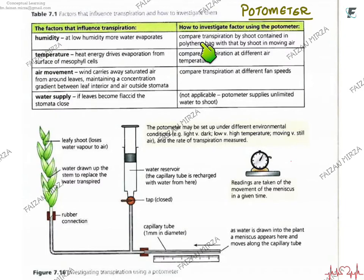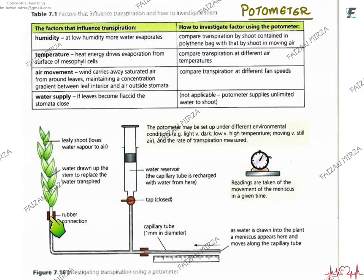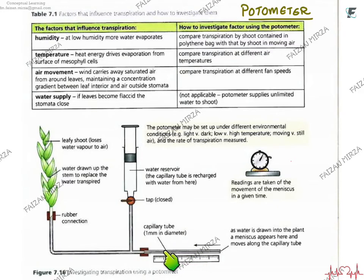The rate of transpiration can be found using a potometer. Water supply cannot be directly measured, but you can carry out various settings to note how the rate of transpiration differs from one environment to another. A potometer has a leafy shoot which loses water through vapors into the air. More water is drawn from a glass tubing connected to a water reservoir. By turning the tap, the meniscus of the water level can be noted from a scale, and the time taken to cover a known distance is recorded using a stopwatch to calculate the rate.